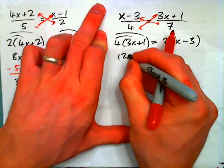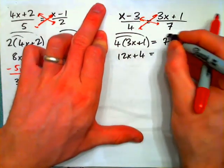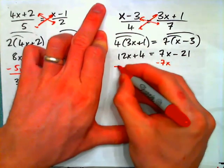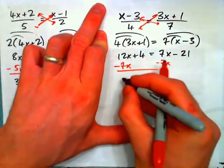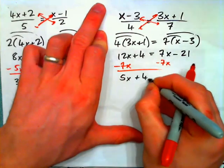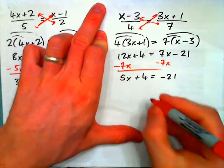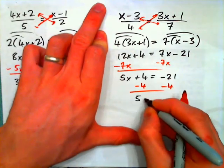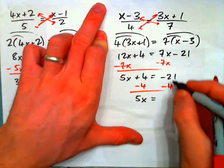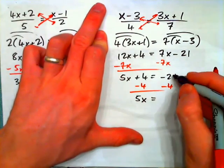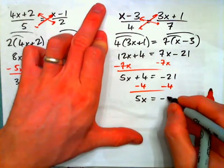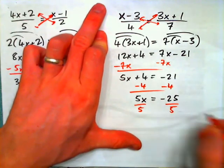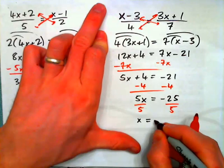Distribute. I get 12x plus 4 equals 7x minus 21. Subtract 7x from both sides. I get 5x plus 4 equals negative 21. Now subtract 4 from both sides. And I have 5x equals negative 21 minus 4. That's 21 negatives combined with 4 negatives gives 25 negatives. Divide both sides by 5 and you should have x is negative 5.